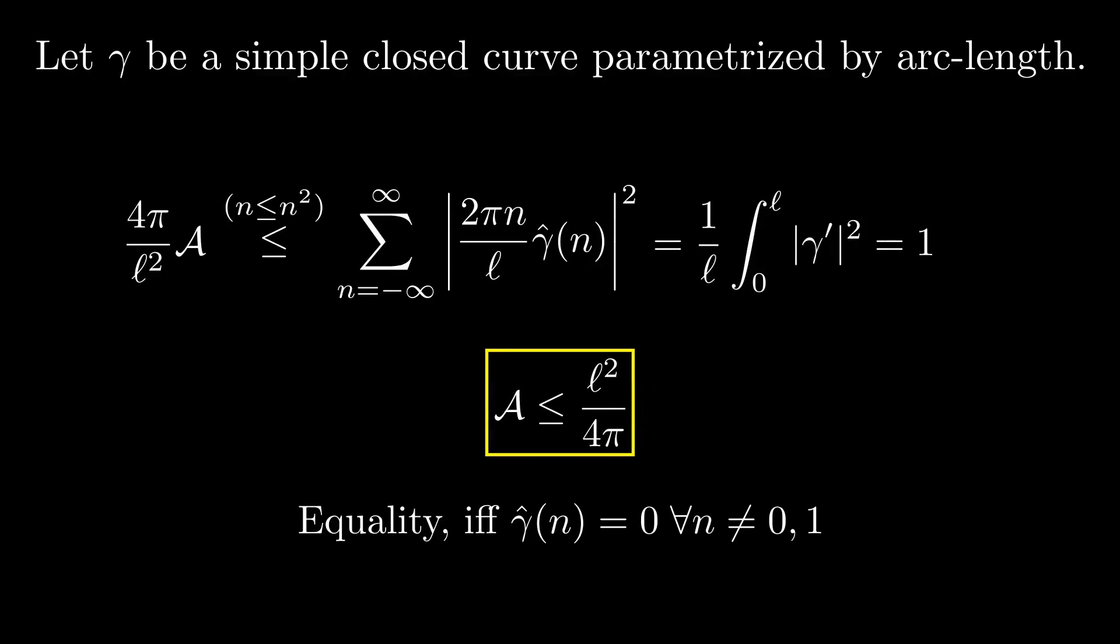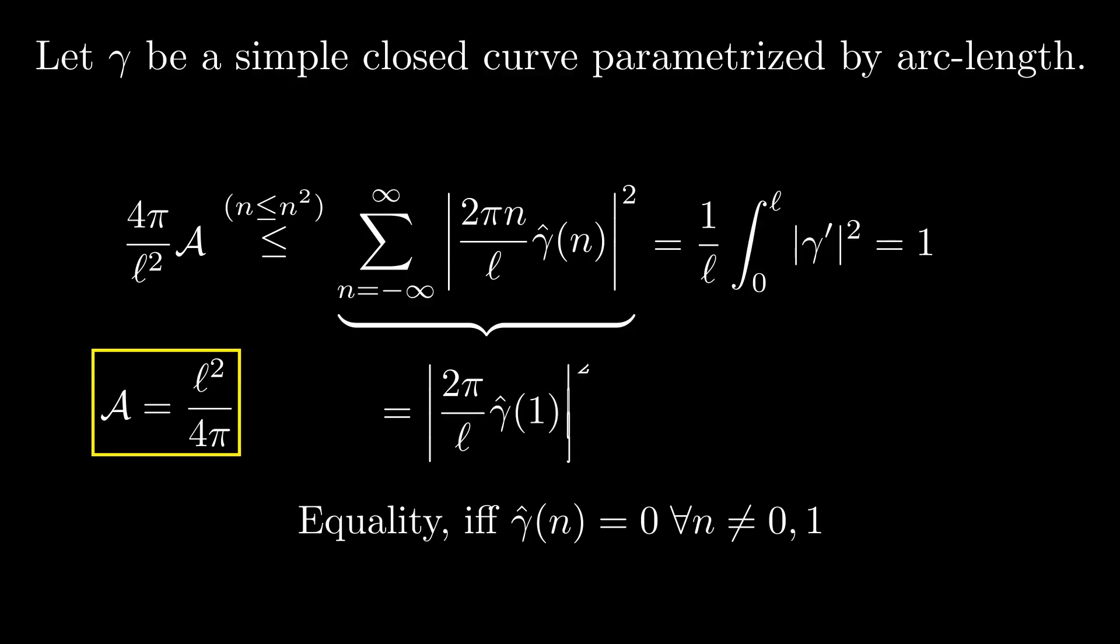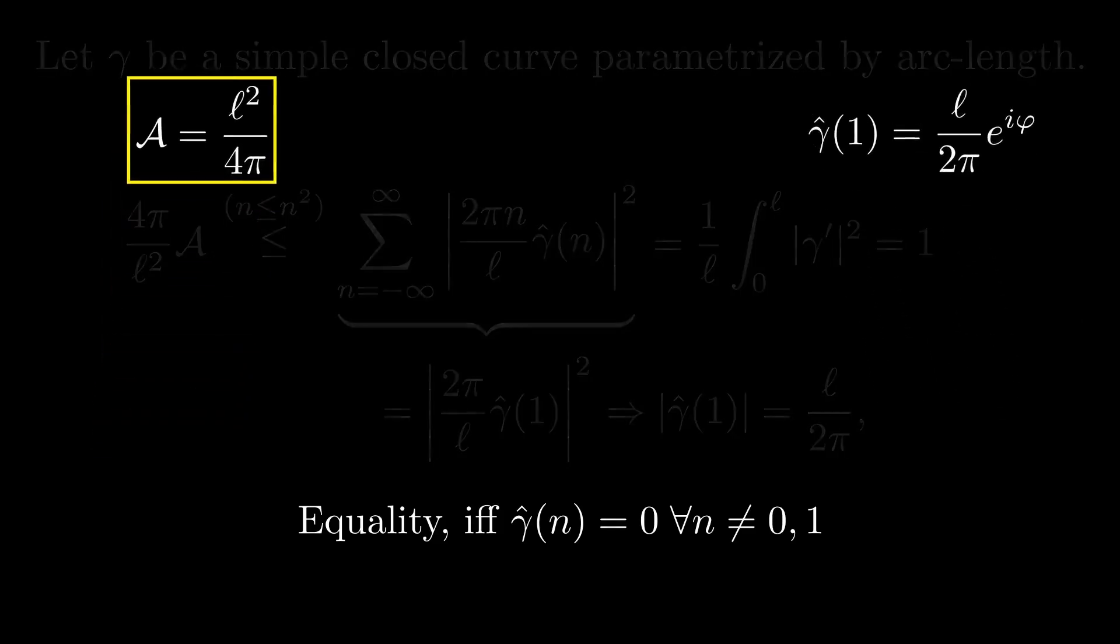Let's now consider the equality case. Here all terms in the sum vanish except for 1. So the absolute value of the first Fourier coefficient is l divided by 2 pi. We can then rewrite the first Fourier coefficient in polar form. So we have equality if and only if certain Fourier coefficients vanish, and in this case the first Fourier coefficient must take a certain form.